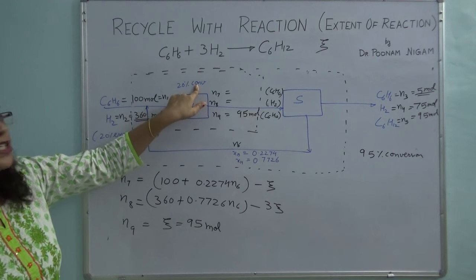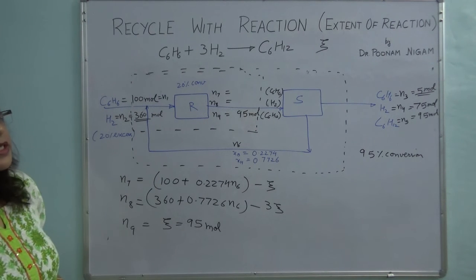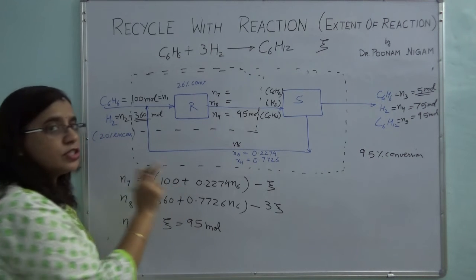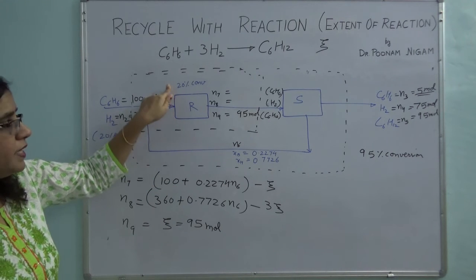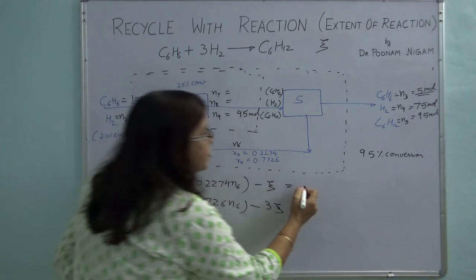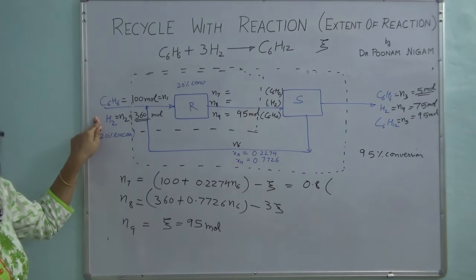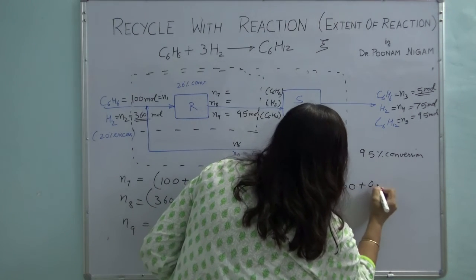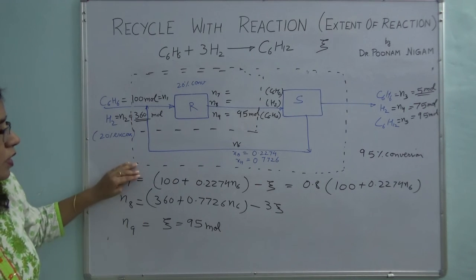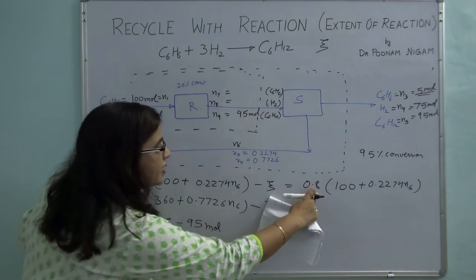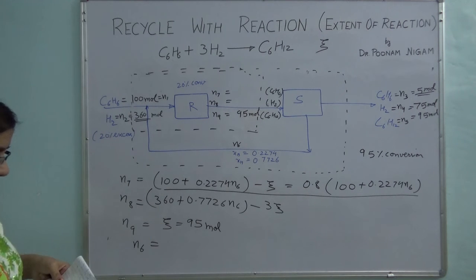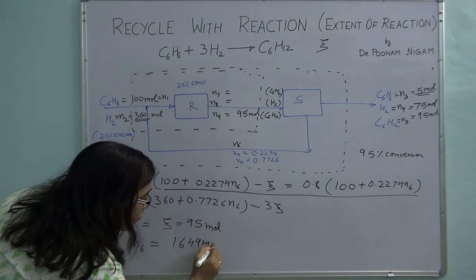Now I use the process specification of 20% conversion per pass. Based on the limiting reactant benzene, if 20% conversion occurs then 80% is unconverted. So N7 = 0.8 × (100 + 0.2274·N6). Since ζ is known (95 moles), this equation has only one unknown: N6. Solving gives N6 = 1649 moles. So I have got the value of the recycle stream.